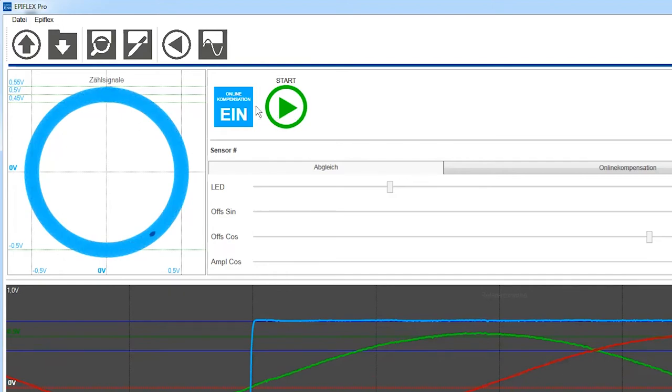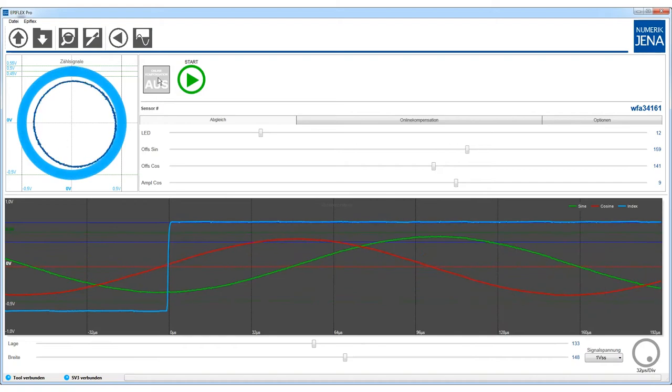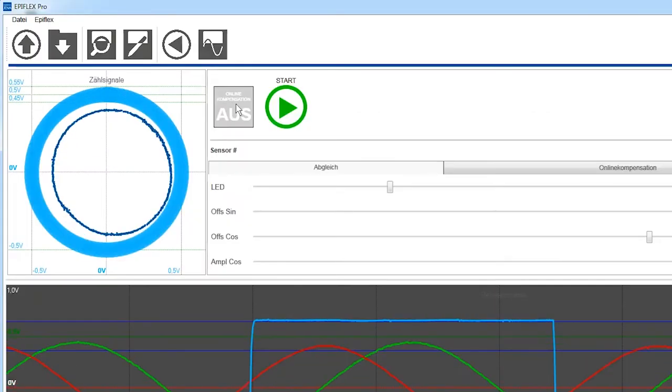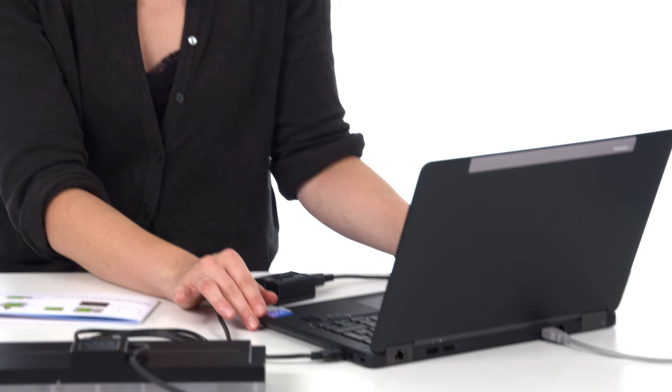Laina now switches off the online compensation to see the raw signals. The Lissajous figure should ideally be circular and within the blue range. Slight deviations are not a problem and can be corrected by performing a signal optimization.